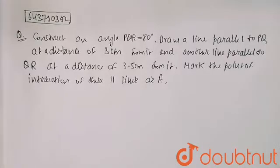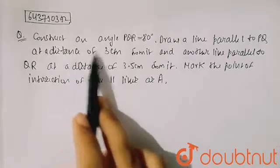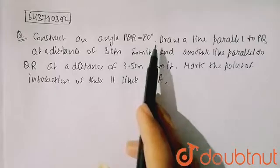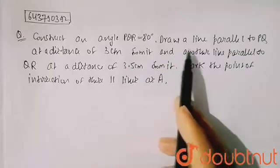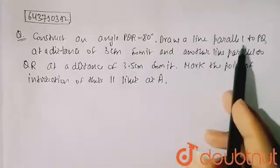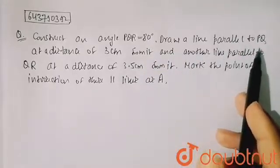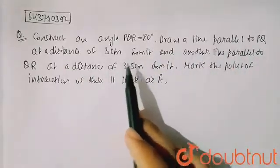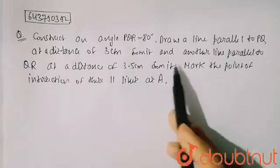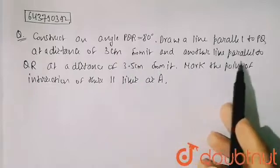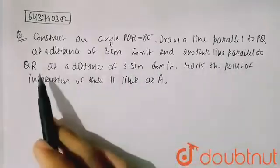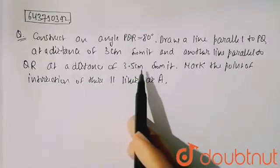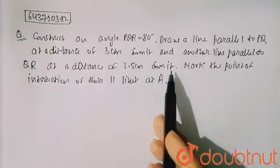It is given that: construct an angle PQR equal to 80 degrees, draw a line parallel to PQ at a distance of 3 centimeters from it, and another line parallel to QR at a distance of 3.5 centimeters from it.